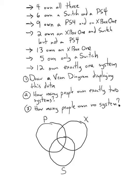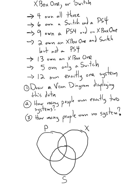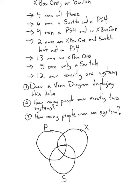I think it's a good exercise for you guys, even though we haven't done this, to try and fill as much of this diagram in as you can. The first one is quite easy. I'll do the first two and then I'll leave you guys to think about the rest. So, four own all three systems, so we can put that in — four are going to be in the center. They own all three.